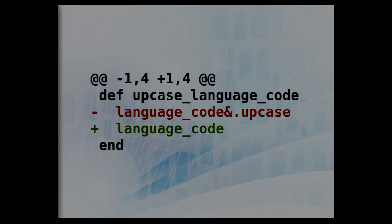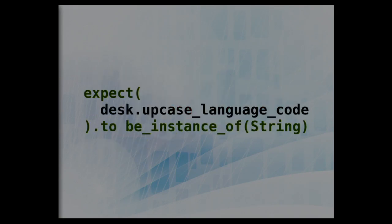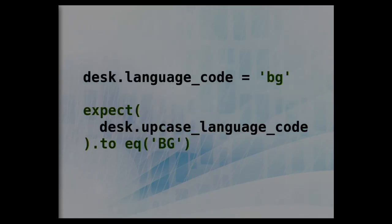Another possible mutation is instead of returning the uppercase, I just return the value of the variable as-is. So I start with a value in lowercase, execute the method under test, and expect the result to be in uppercase. This kills the first and second zombies as well. Sometimes one test is enough to kill more mutants.